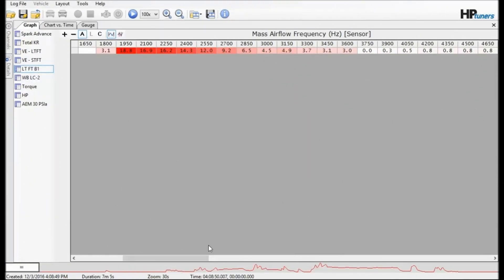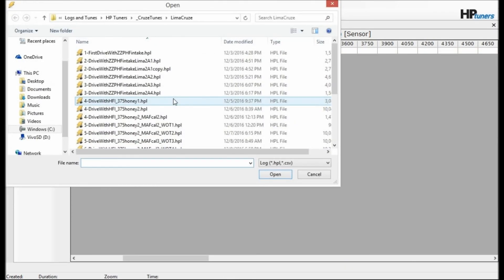Now we're looking at the ZZP install. This is with the ZZP spacer and you can see we are extremely lean around idle and a little bit off idle, but you will notice that spacer does help out at the higher RPM lighter loads.